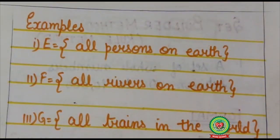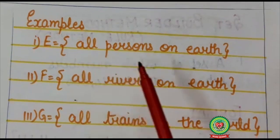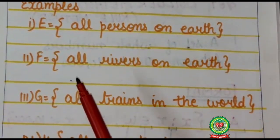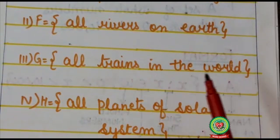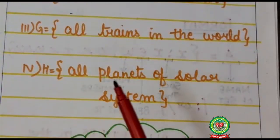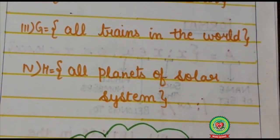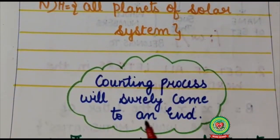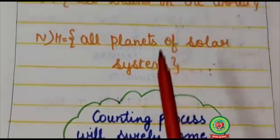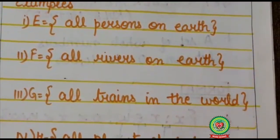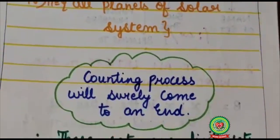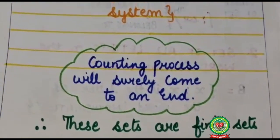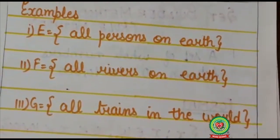Now here I am having some examples like E: all persons on earth, F: all rivers on earth, G: all drains in the world, H: all planets of solar system. Now as you can see sometimes we cannot count the objects of set but we know that counting process will surely come to an end. With these sets counting process will surely come to an end. Therefore, these sets are finite sets.